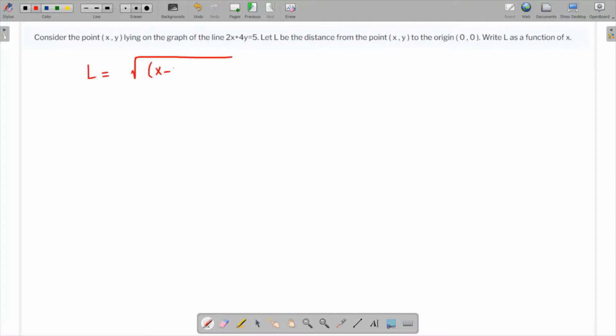(x - 0)² + (y - 0)², which is nothing but sqrt(x² + y²). But we need to eliminate this y, which we can do using this equation.